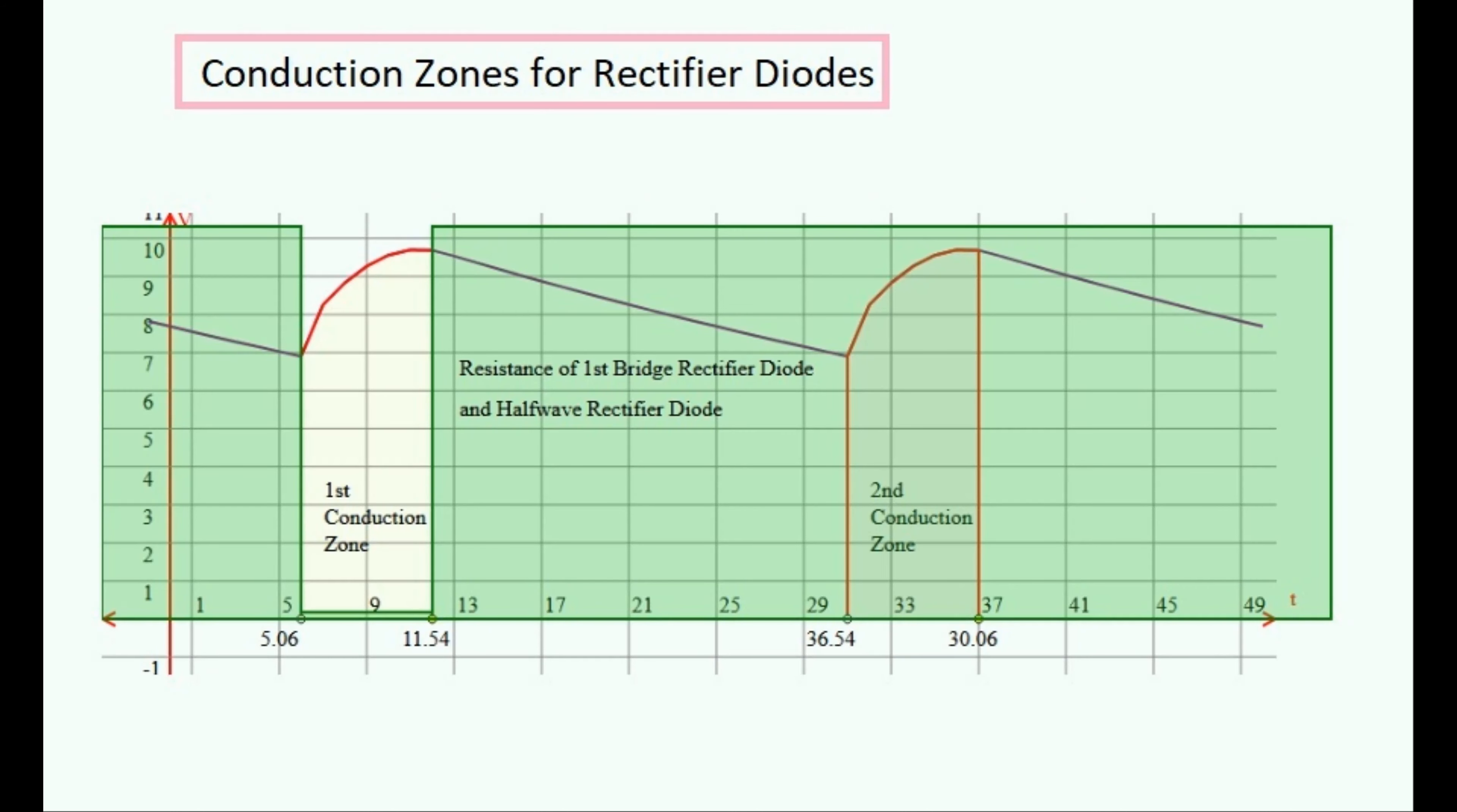This is what the resistance of the first type of diode in the bridge rectifier looks like as a function of time, being very high most of the time and dropping to a low value during the first conduction zone. This diode can also double up for the diode in the half-wave rectifier.